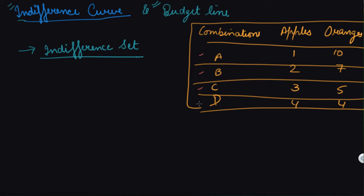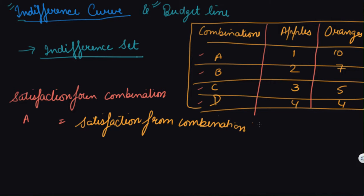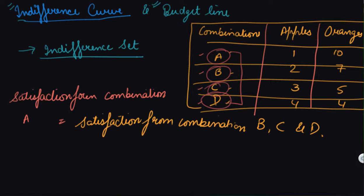These are four different combinations that you can buy. The satisfaction you get from all these combinations is the same — the satisfaction from combination A equals the satisfaction from combination B, C, and D. Whether the consumer chooses option A, B, C, or D, they will get an equal level of satisfaction from all these combinations.